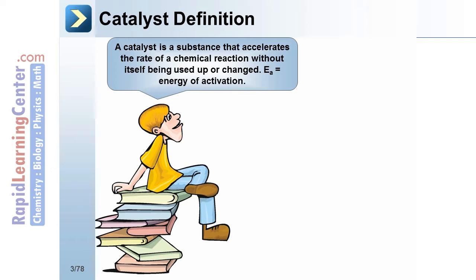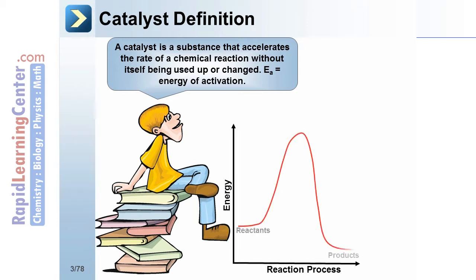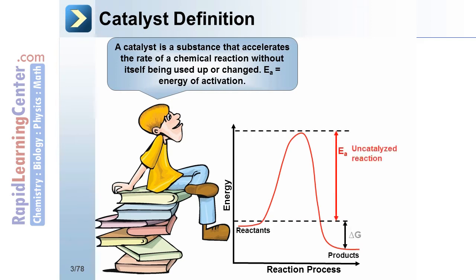E sub A equals the energy of activation. Let's take a look at this graph. Here we see energy on the vertical axis while we see the reaction process on the horizontal axis. Notice the uncatalyzed reaction and its activation energy. Delta G is the difference between the reactant's base state and the product's energetic state. This is a picture of the enzyme-catalyzed reaction. Notice how the activation energy has been lowered — that is, the energy required to form products has been decreased.